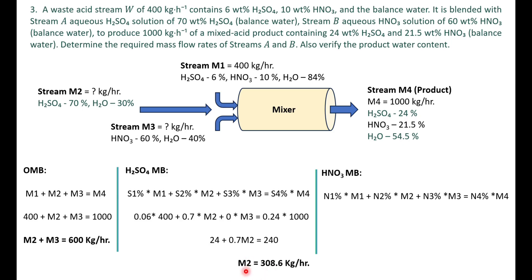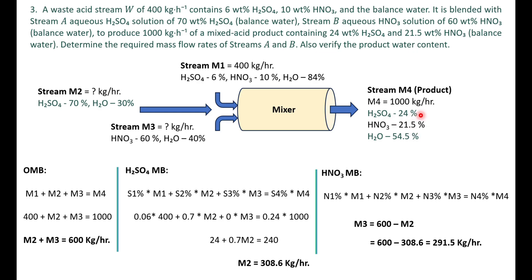Substituting m2 into equation 1: m3 = 600 − 308.6 = 291.5 kg/hr. So we have found m2 and m3. Mixing 308.6 kg/hr of stream A and 291.5 kg/hr of stream B with 400 kg/hr of stream 1 produces 1000 kg/hr of mixed acid with 24 percent sulfuric acid, 21.5 percent nitric acid, and the balance water.